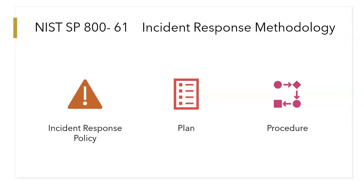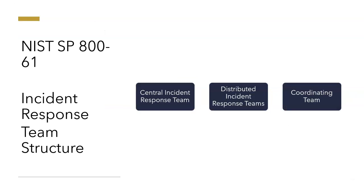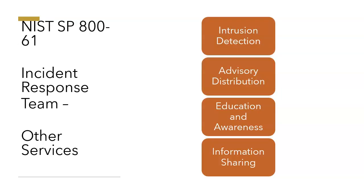This document also guides how to share incident information with outside parties — such as third parties, law enforcement agencies, and media. It then discusses incident response team structure, covering three team models: centralized, distributed, or coordinating. Employees in these teams can be permanent, partially outsourced, or fully temporary. The document also discusses other services the incident response team can provide, such as intrusion detection, advisory distribution, education and awareness, and information sharing.